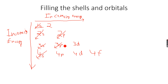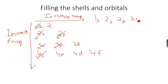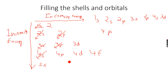The 4s orbital has lower energy than the 3d orbital, so the 4s orbital fills first compared to the 3d orbital. The full filling order is: 1s, 2s, 2p, 3s, 3p, 4s, 3d, 4p, and then 5s.